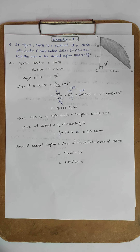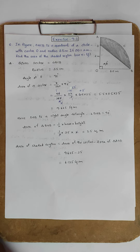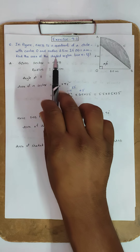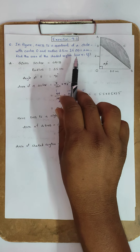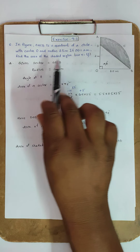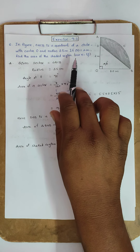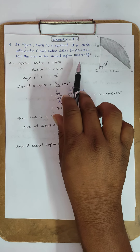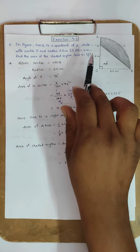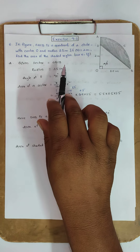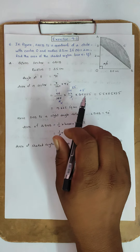Hi everyone. Today our topic is about tangents and secants to a circle, exercise 9.36. In the figure, OACB is a quadrant of a circle with center O and radius 3.5 cm. If OD equals 2 cm, find the area of the shaded region.